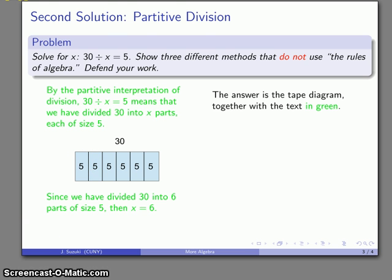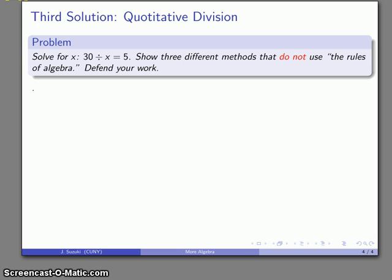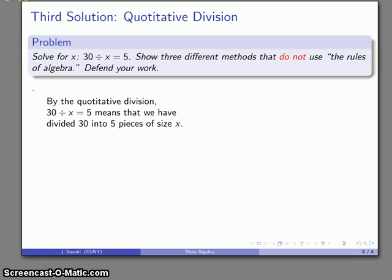Well, remember, there is a second way of interpreting division, which is as a quotative division. And so in this case, what I've done is 30 divided by x. So I'm going to do this as a quotative division. I've divided 30 into pieces of size x. And at the end of it, I've gotten 5 such pieces. So let's go ahead and do a similar solution using a tape diagram.